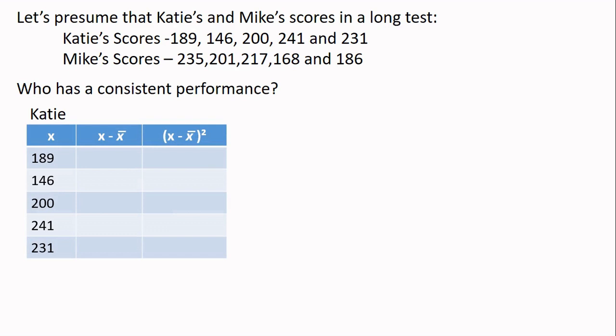So first, we're going to solve for the mean. This is 189, 146, 200, 241, and 231. So summation of x equals 5 scores. So that would be equals to 1007 divided by 5. So our mean here is equals to 201.40.